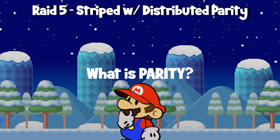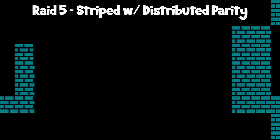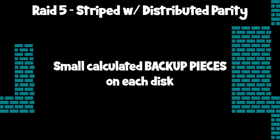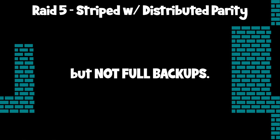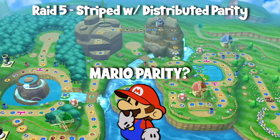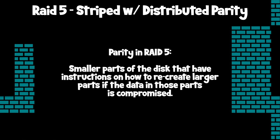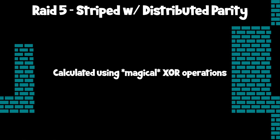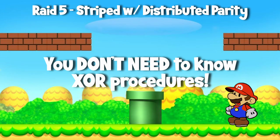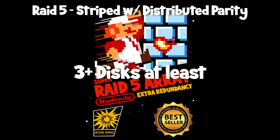RAID five — striped with distributed parity. This is the most complicated one, so we're going to put extra time into it. RAID five is a RAID level that provides redundant storage for error correction and recovery in the event of a hard disk failure. It's typically used in applications where high storage capacity and read-write performance are important, such as database applications. Parity is calculated values used to reconstruct data after a failure, calculated using an exclusive-or procedure on the data. You don't need to know how it's calculated for the exam. RAID five is the most common RAID configuration and requires a minimum of three disks.